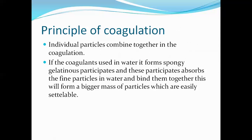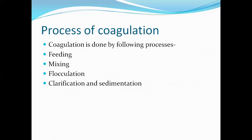When a coagulant like alum or ferrous sulfate is added into the water, it forms spongy gelatinous precipitates. These precipitates absorb all fine particles or impurities in the water, and the gelatinous precipitates and fine particles bind together to form a bigger mass of particles which is easily settleable due to the force of gravity. This is the principle of coagulation.